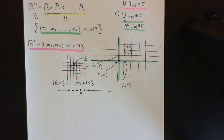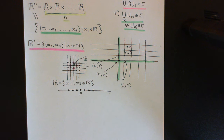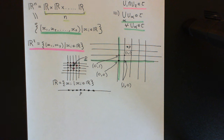Welcome back to this next video in which we are discussing the standard topology on Rn. In the previous video, what we did is we motivated what we were trying to achieve with the standard topology on Rn. For R1, R2, and R3, the standard topology is going to create a topological space which will mirror the structure of the one-dimensional, two-dimensional, and three-dimensional continuums respectively.